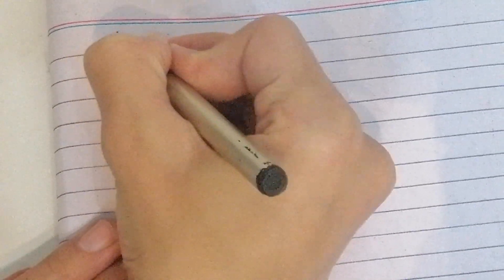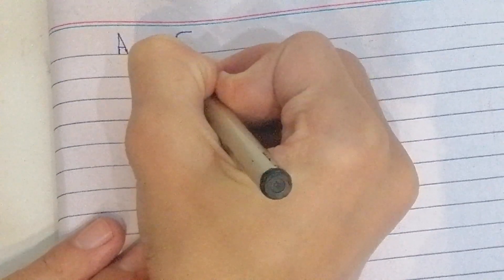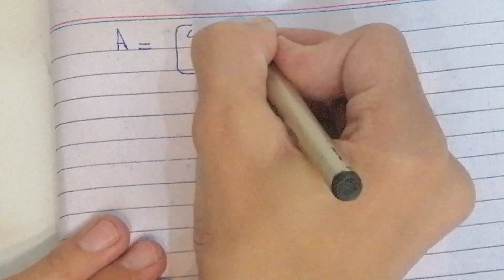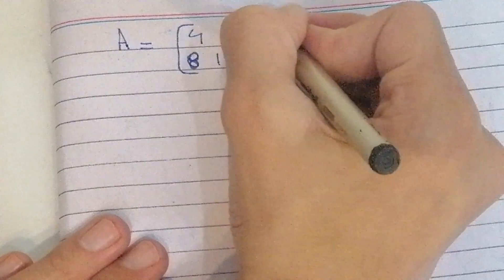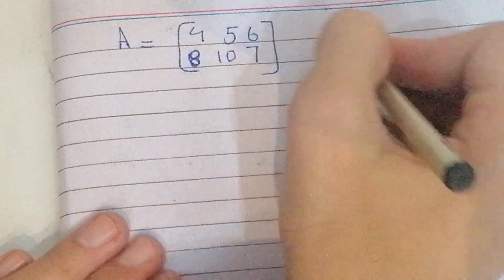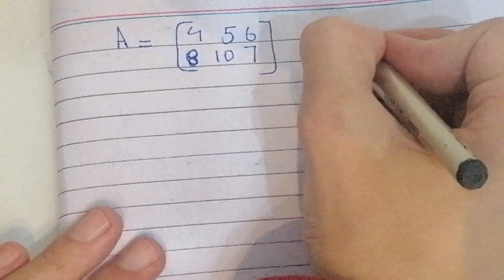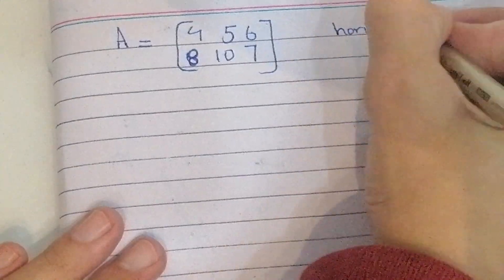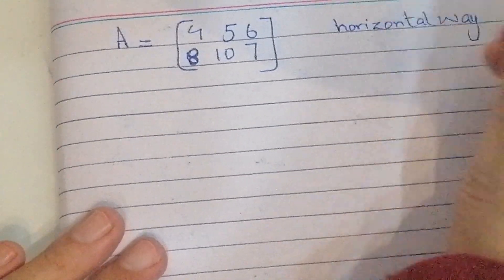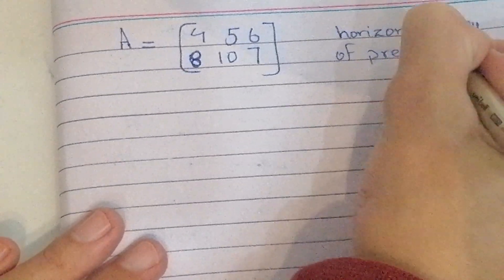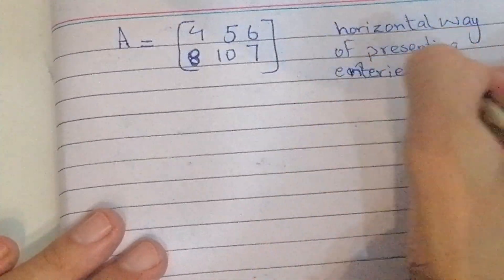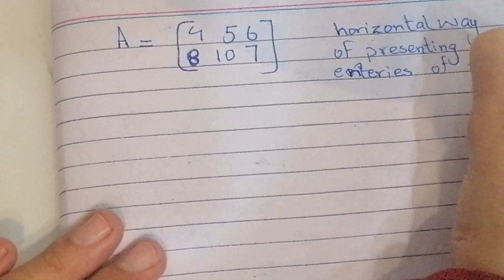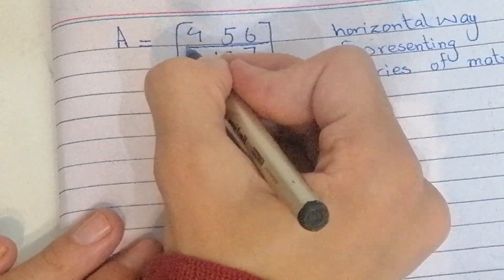Let me show you on the rough register. Let's suppose matrix M contains numbers like 4, 5, 6, and more. The rows are the entries presented in a horizontal way. This is the first row and this is the second row.